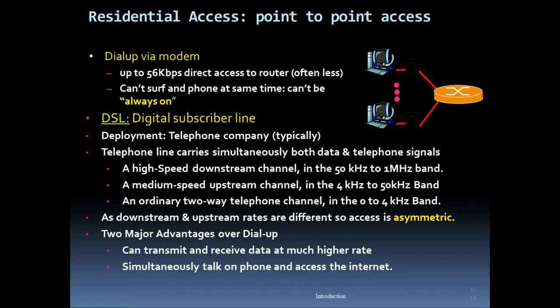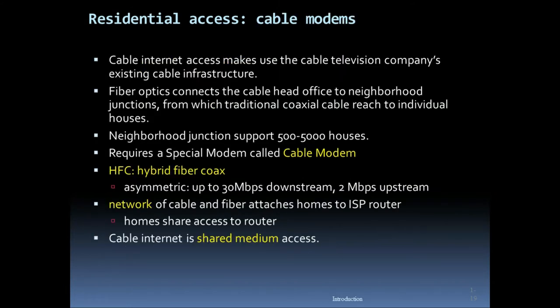Two major advantages of DSL over dial-up: it can transmit and receive data at much higher rates, and you can simultaneously talk on the phone and access the internet. Cable modems use the cable television company's existing cable infrastructure. Fiber optics connects the cable head office to neighborhood junctions, from which traditional coaxial cable reaches individual houses. Each neighborhood junction supports 500 to 5,000 homes and requires a special cable modem.